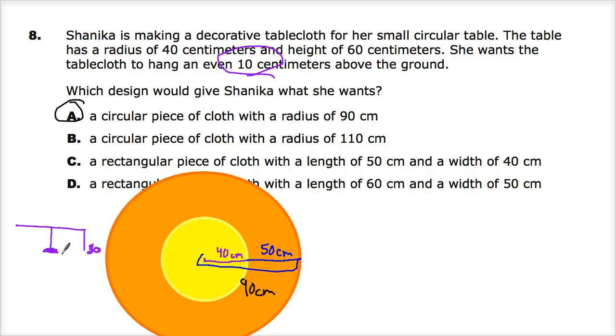The only way that you can hang evenly is to have the same shape as the top of the table. So, if the top of the table is a rectangle and you want it to hang evenly, then you can use a rectangular piece of cloth. If you have a circular table and you put a rectangle on it, one side is going to be really long and one side is going to be short.